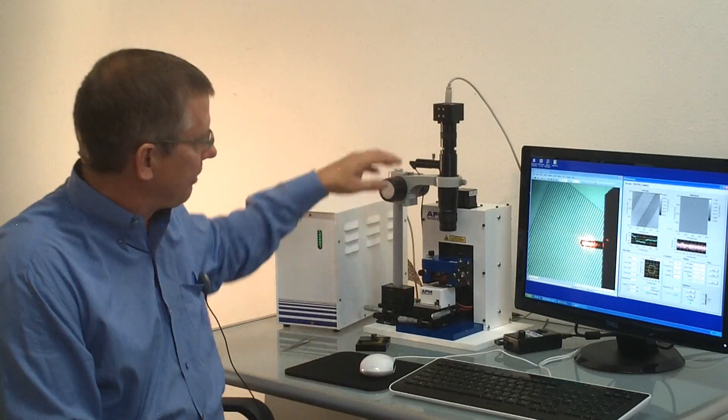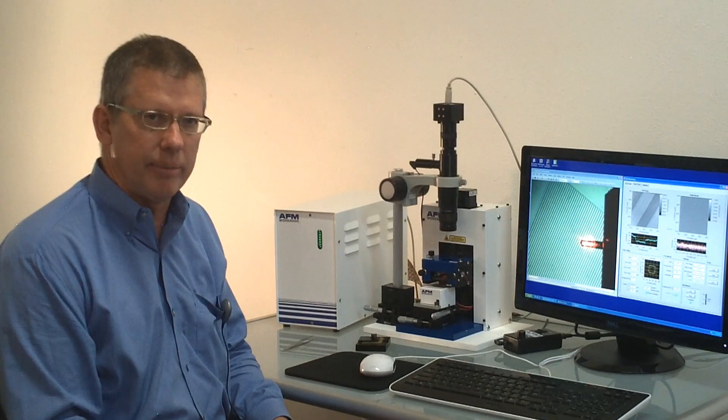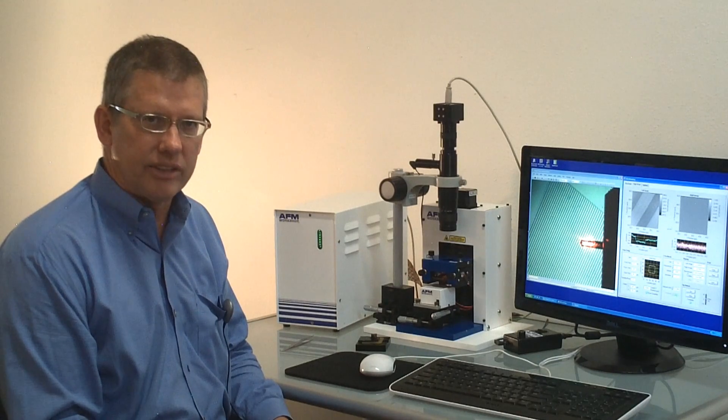The second component is the video optical microscope. The video optical microscope is useful for three functions. The first function is locating the feature on the surface you'd like to image. The second function is aligning the light lever force sensor. And the third function is for doing tip approach.